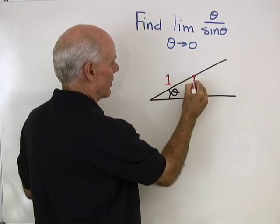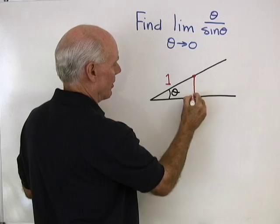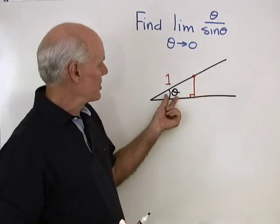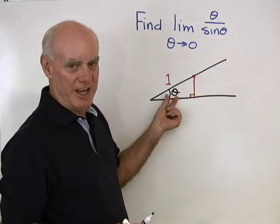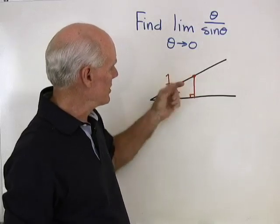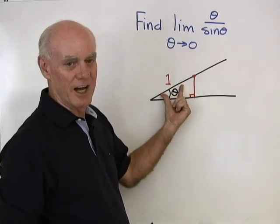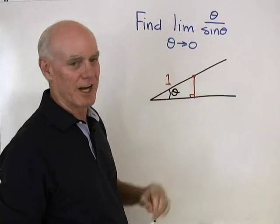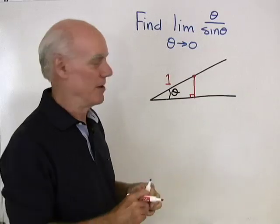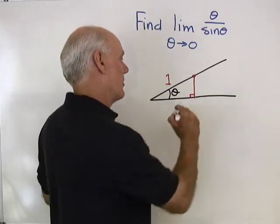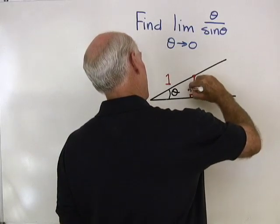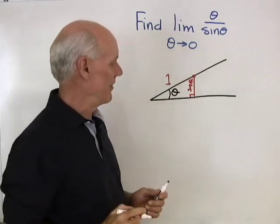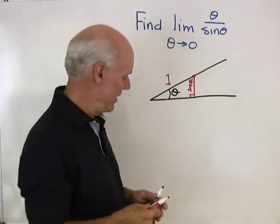I'm going to find the point that's one unit away from the vertex. So that's one, and I'm going to draw this little right triangle in. Now, the sine of theta is the ratio of the opposite side to the hypotenuse. Since the hypotenuse is one, the sine of theta and that opposite side are exactly the same thing. So that length is sine theta.